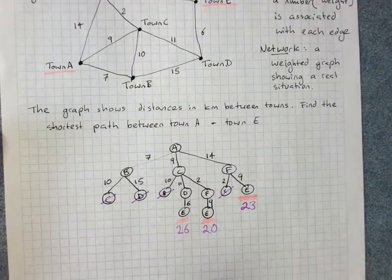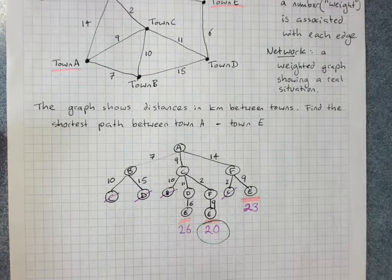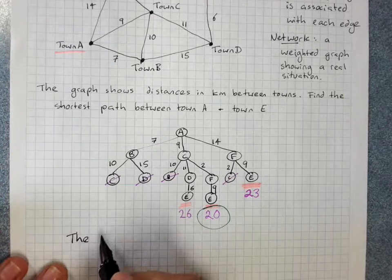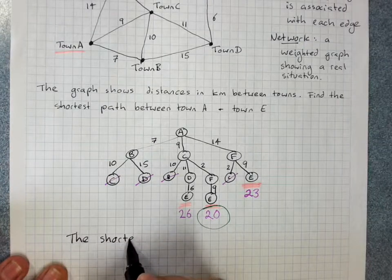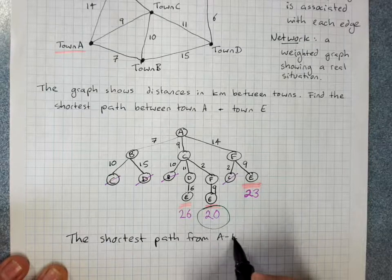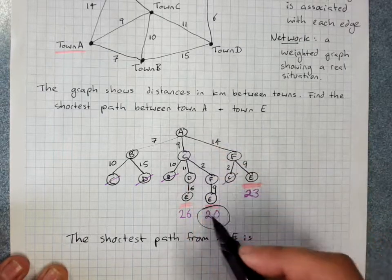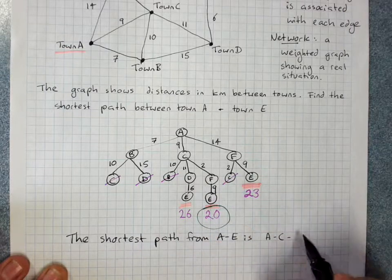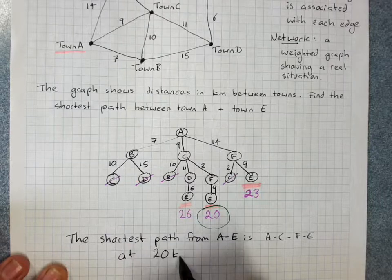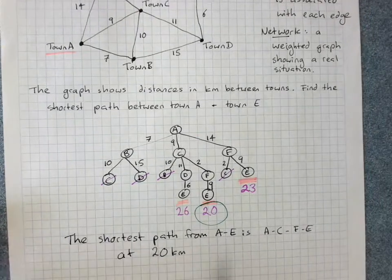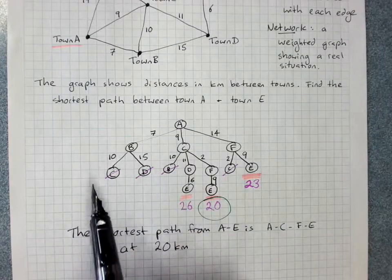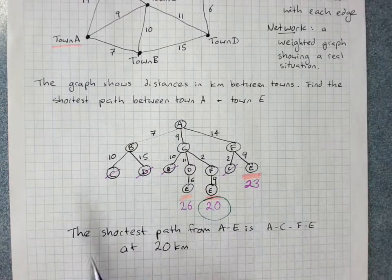And you'd give your path A-C-F-E and its length at 20 kilometers. If they asked you to prove that it was the shortest path, then you would have to work out each of these down to E and show that it was the shortest path.